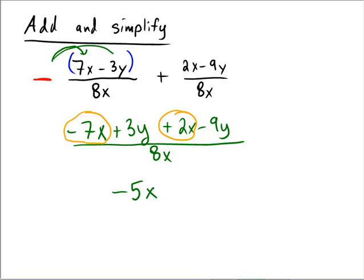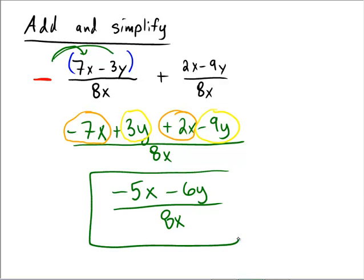On the other hand, we have a positive 3y that's being subtracted by 9y. 3 minus 9 is negative 6, so we have minus 6y. This is all over 8x, and there's no more simplification that can occur, so we're done with this problem.